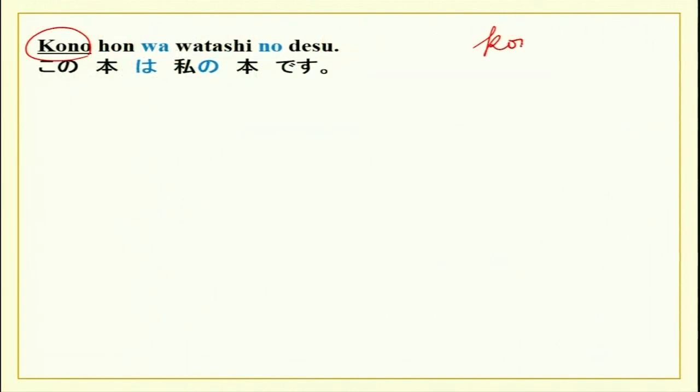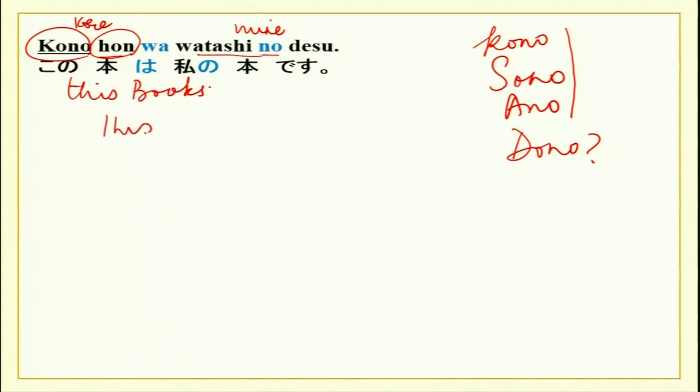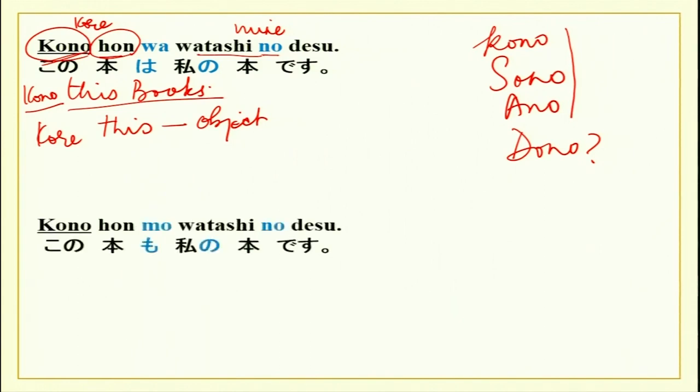Now, we have kono, sono, ano, and dono. Again, a question word over here. This is also from the ko, so, a, do series. Kono hon wa watashi no desu. Watashi no means mine. Kono hon. Now, what are we doing? Instead of saying kore, we are saying kono hon. So, we are naming the object. The listener who is in front of me knows the name also of the object. Kono hon, this book. It is a little different from this, which says this object and does not name the object, which is kore over here. We are using kono hon, which names the object. Tells the name of the object and says I am talking about this object. Kono hon wa watashi no desu.